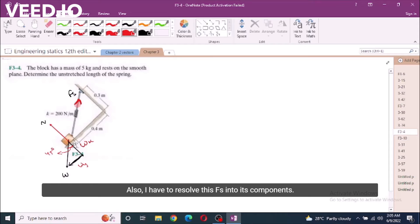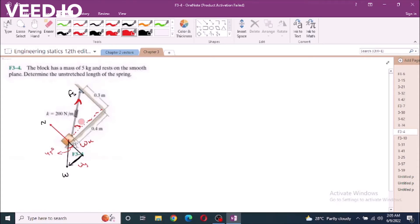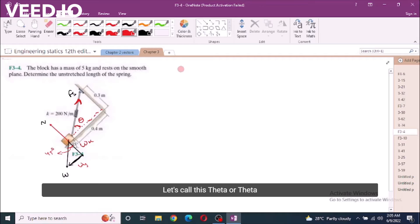Also, I have to resolve this Fs into its components. For this, I must know this angle which is forming right here. Let's call this Theta. For Theta, tan Theta equal to 0.3 over 0.4, Theta equal to 36.869 degrees.